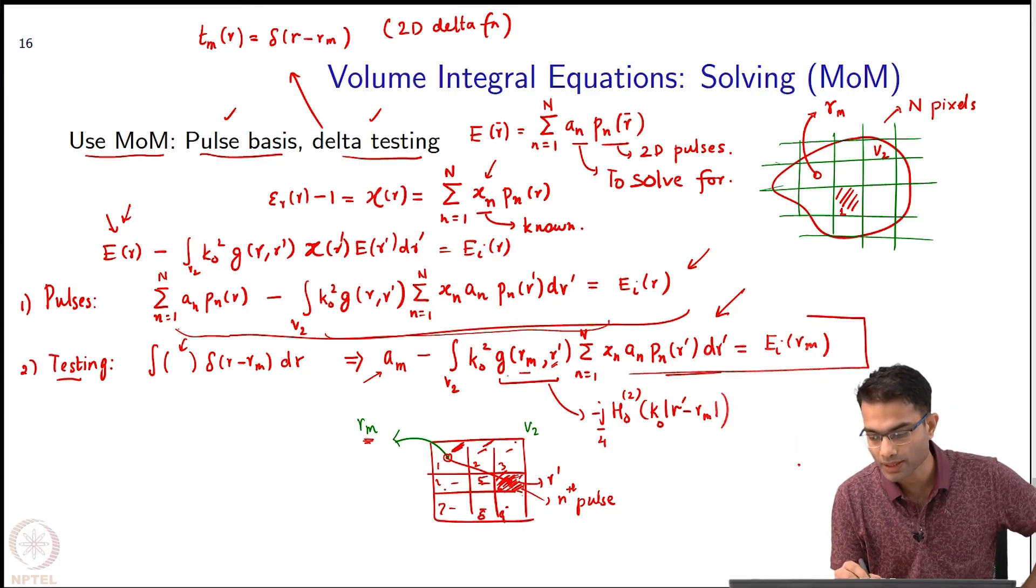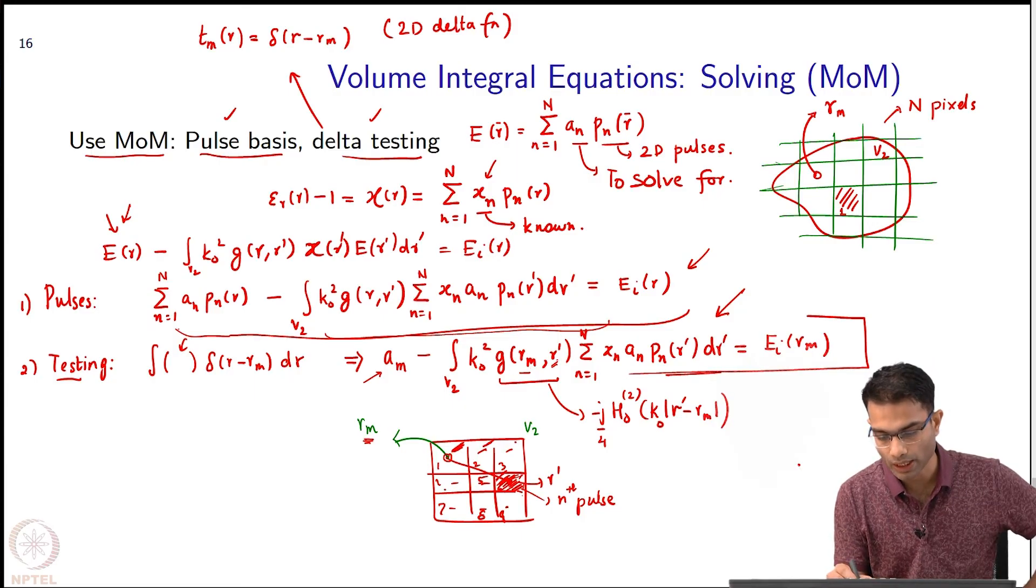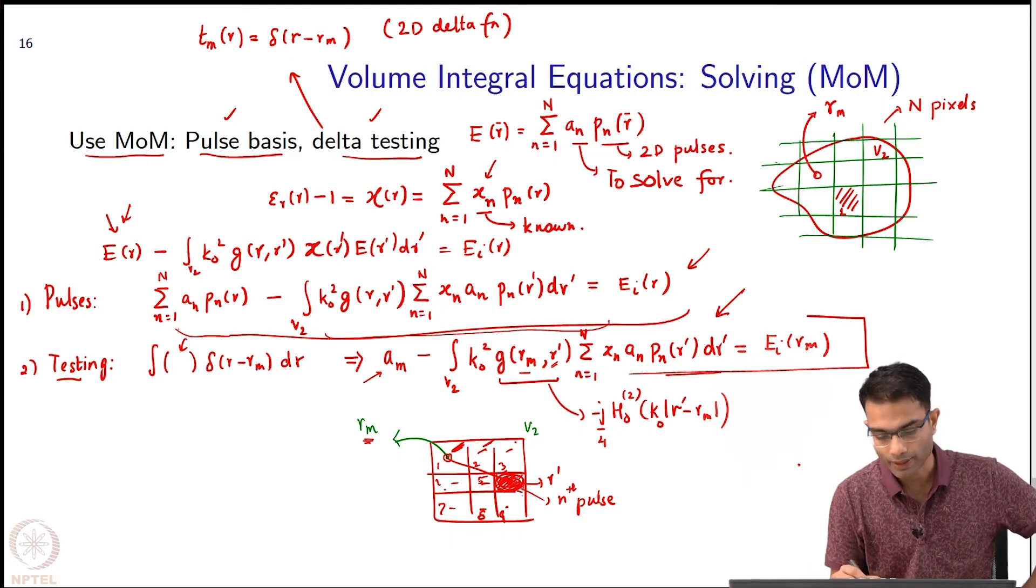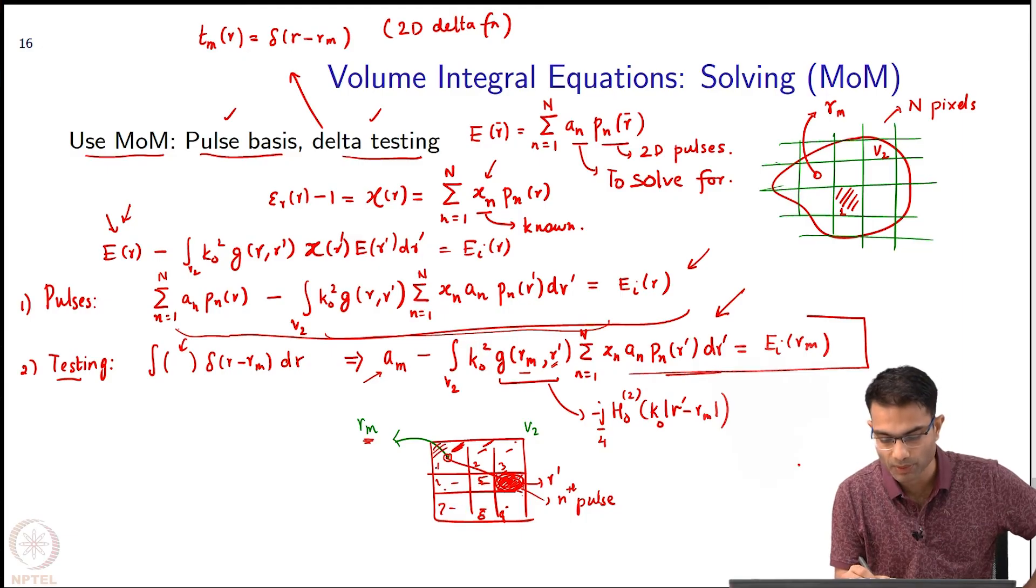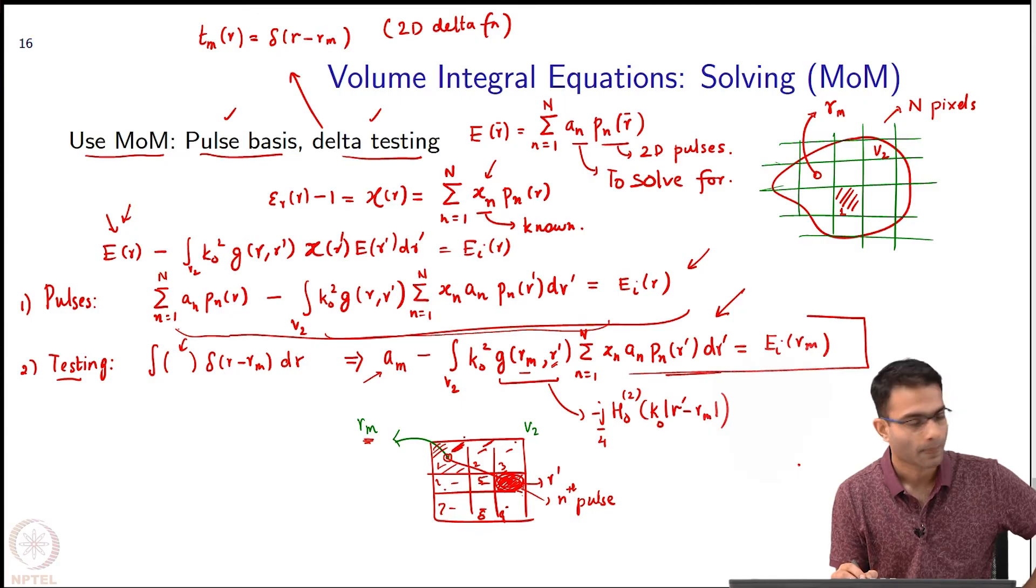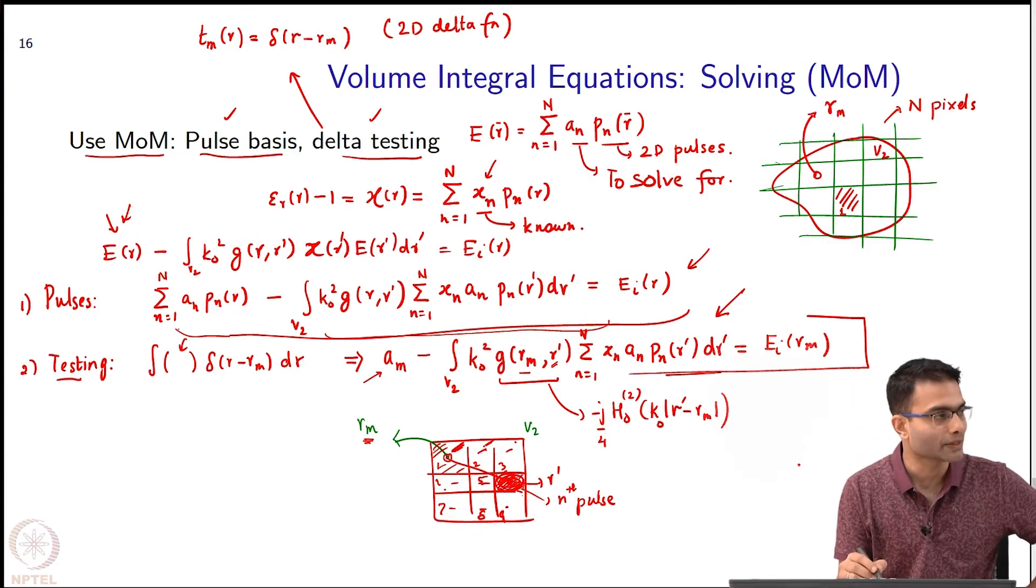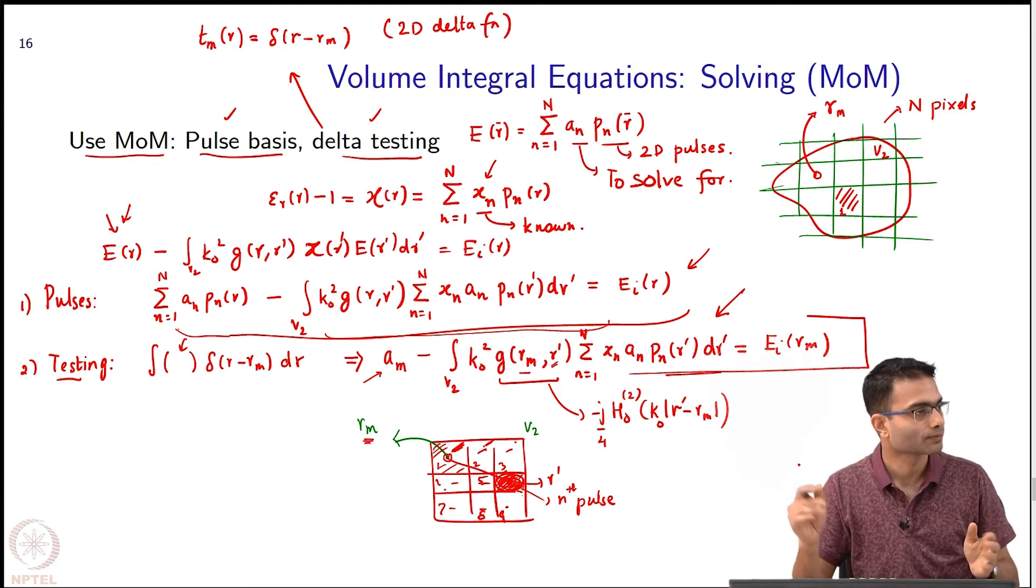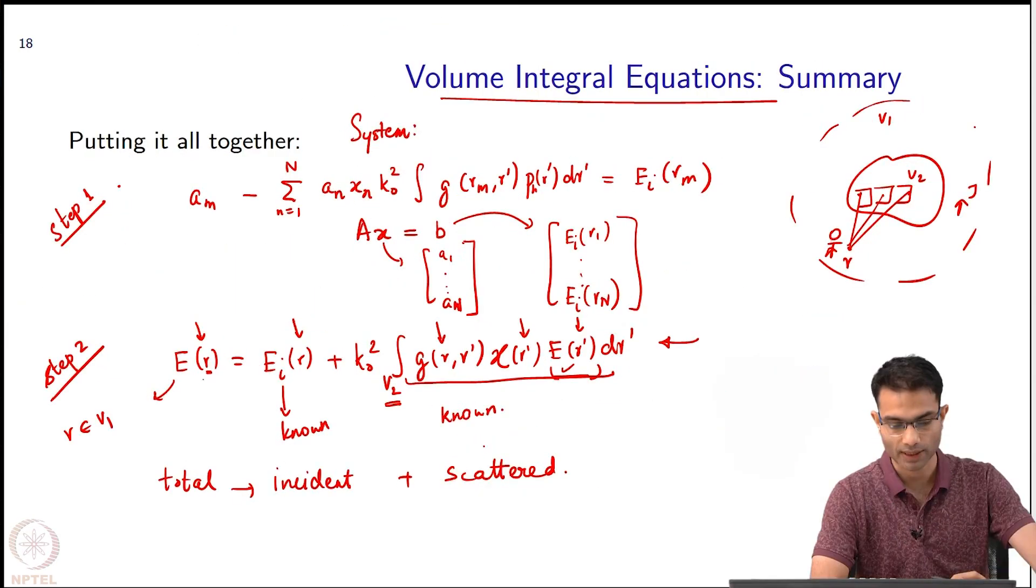So when I take, let's say, the 6th pulse over here, r' varies over this pulse. So there is no singularity to worry about. g—r_m is fixed, r' is varying over this pulse, no problem. I calculate this, but this summation goes over all the pulses. So at some point it will come back to pulse number 1 where r_m or r_1 lives. So r' is varying over the entire V_2, but entire V_2 is split up into pulses, so I have to go pulse by pulse. That is how I split this up. Yeah, this is the last slide, yeah.